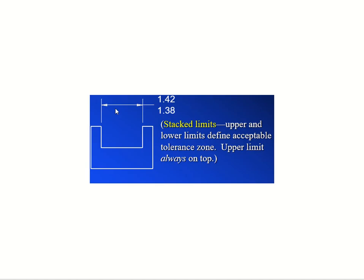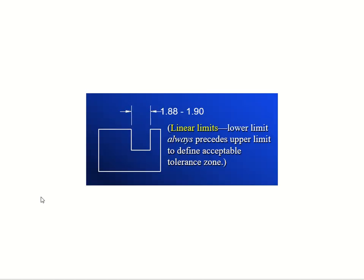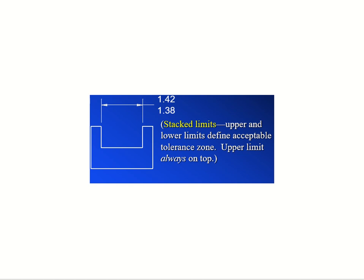In the next example, look at how we change it: 1.42 on top and then 1.38 written below. So that's your lower limit for the acceptable tolerance zone. The upper limit is on top, lower is below. We call this format linear. The previous one was stacked.